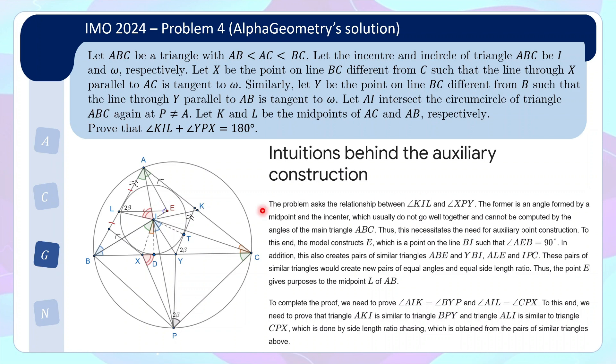But I don't know, what do you think of this constructed point E? Is it intuitive that this point will actually be helpful? I mean, to me, it seems a bit hard to come up with this point, especially if the benefit of that is you get a whole bunch of similar triangles and you need five of these pairs to actually achieve your ultimate objective of getting the similar triangle ALI and CPX. So to me, it's not very intuitive, but who knows? Maybe to the AI, it's a lot easier to come up with this solution.